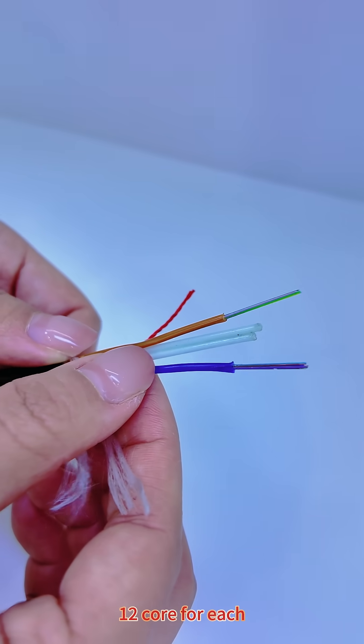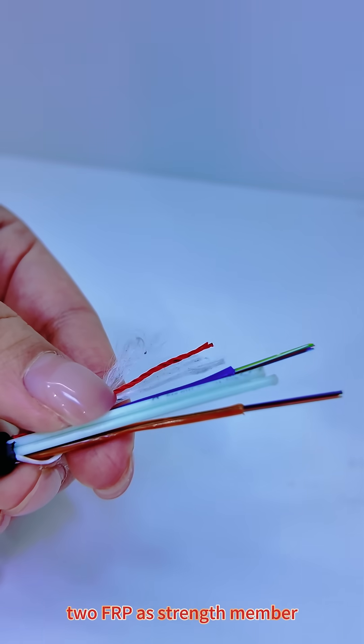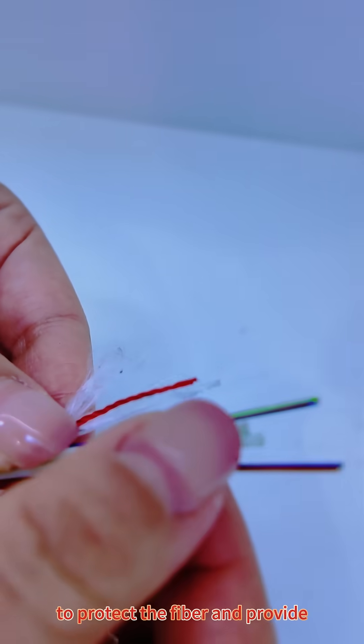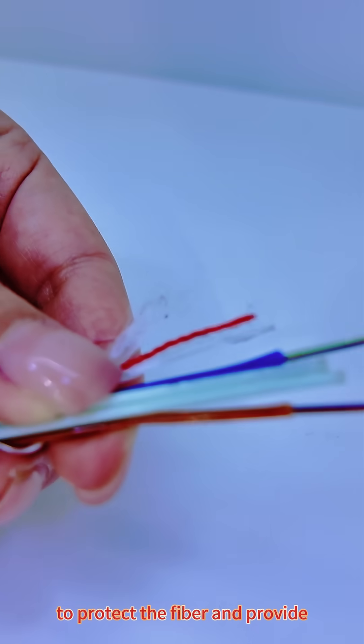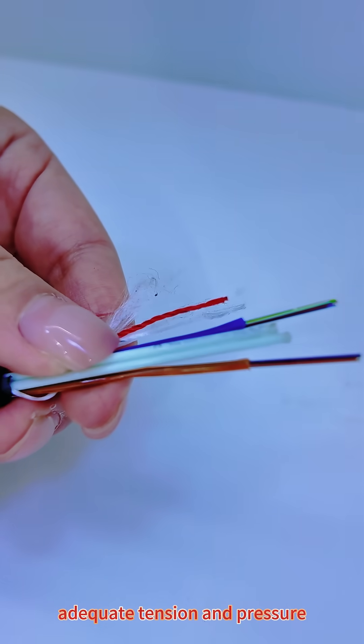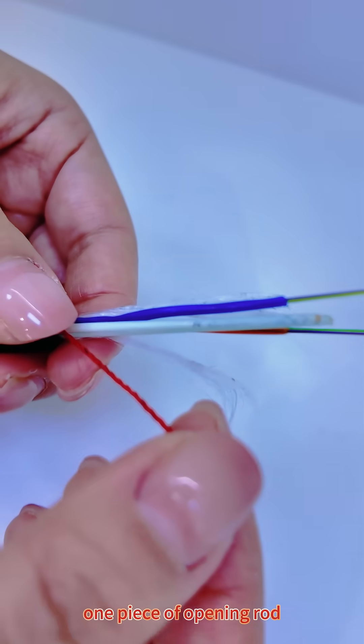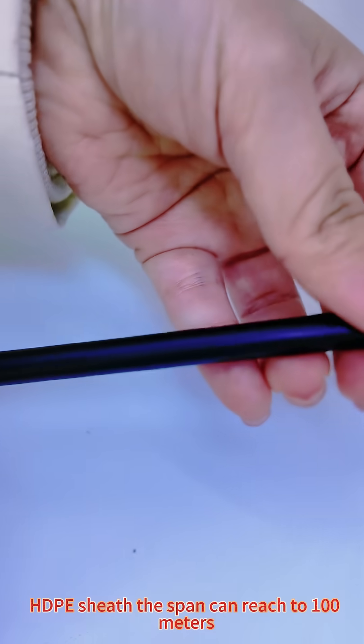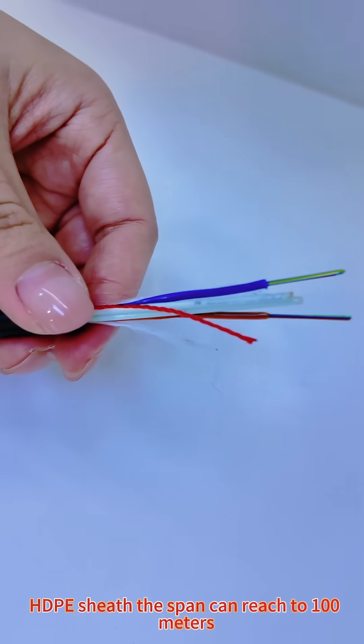12 core for each. Two FRP as strength member to protect the fiber and provide adequate tension and pressure. One piece of opening rod, HDPE chase. The span can reach to 100 meters.